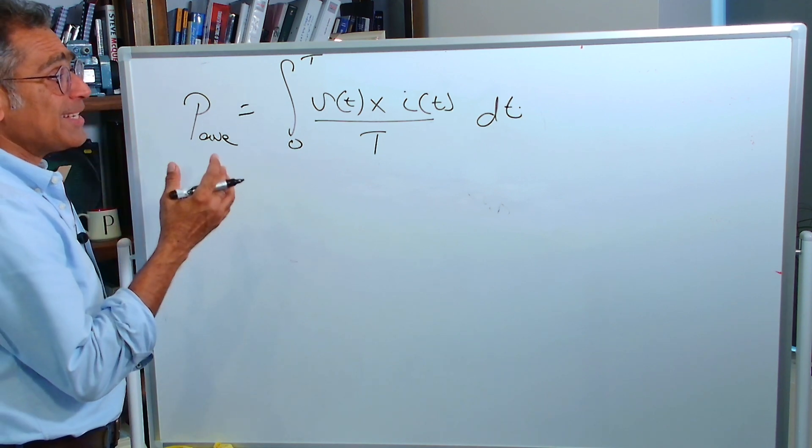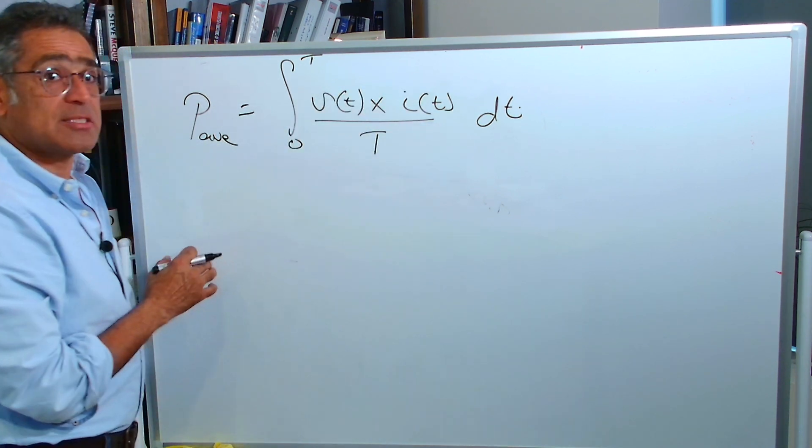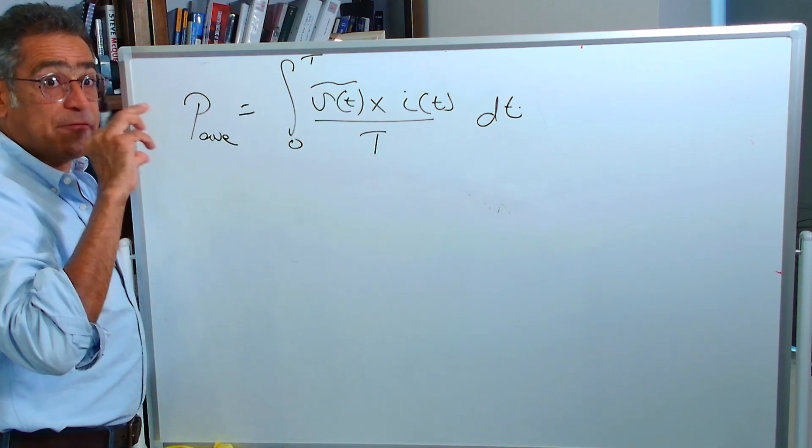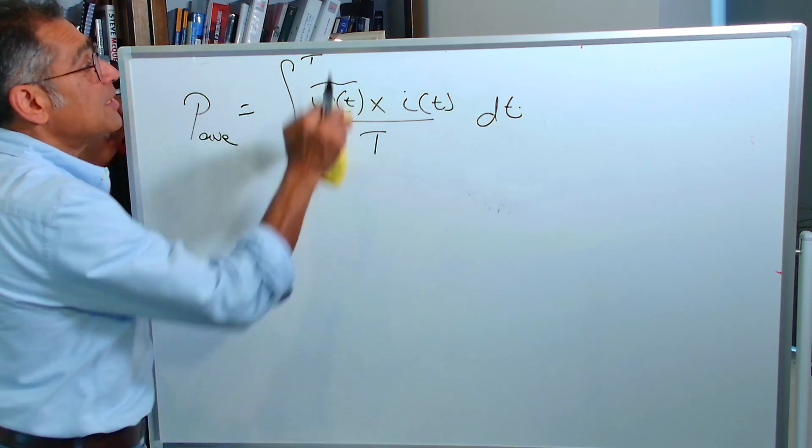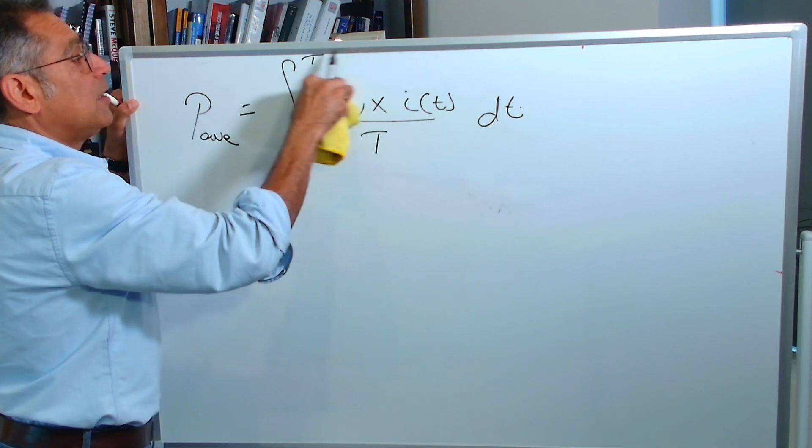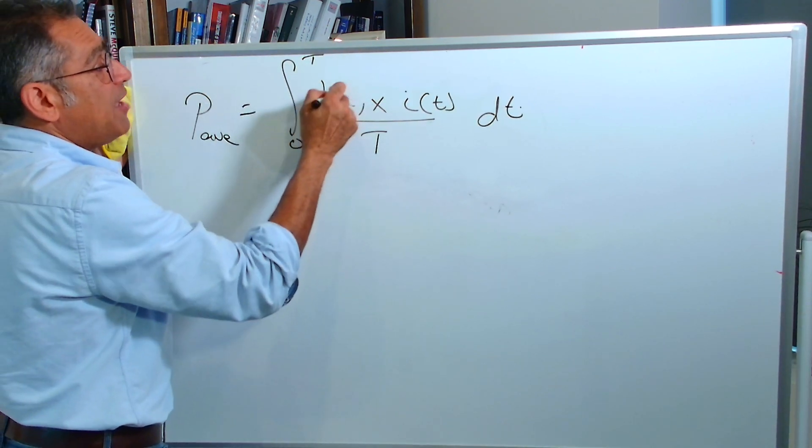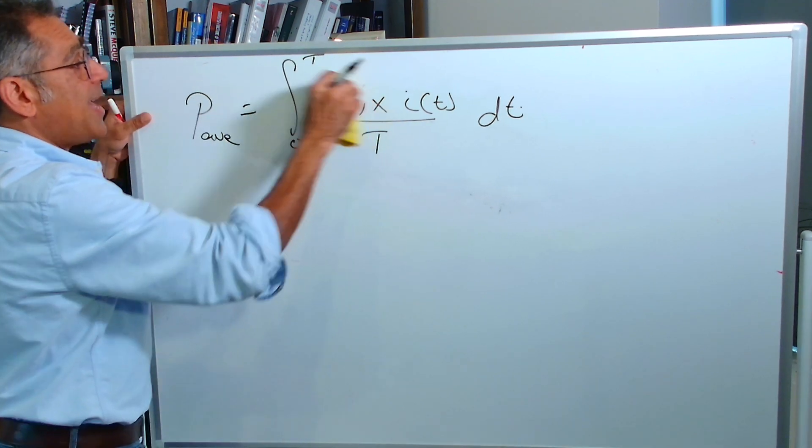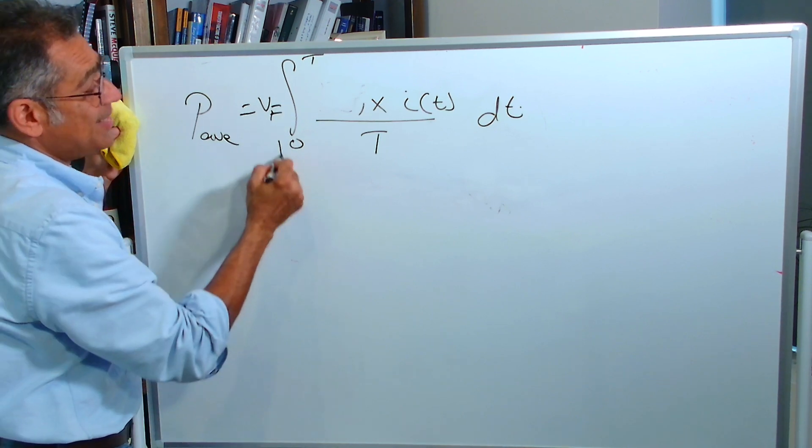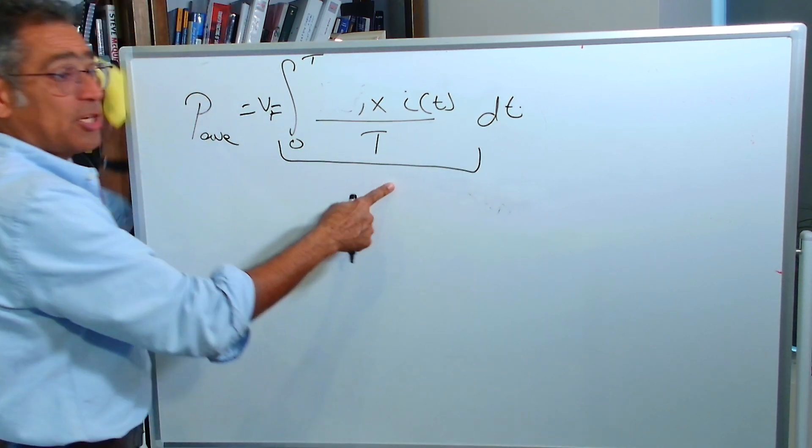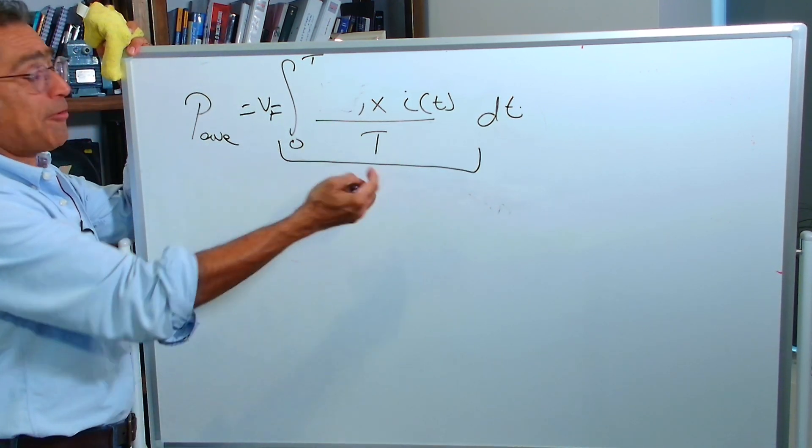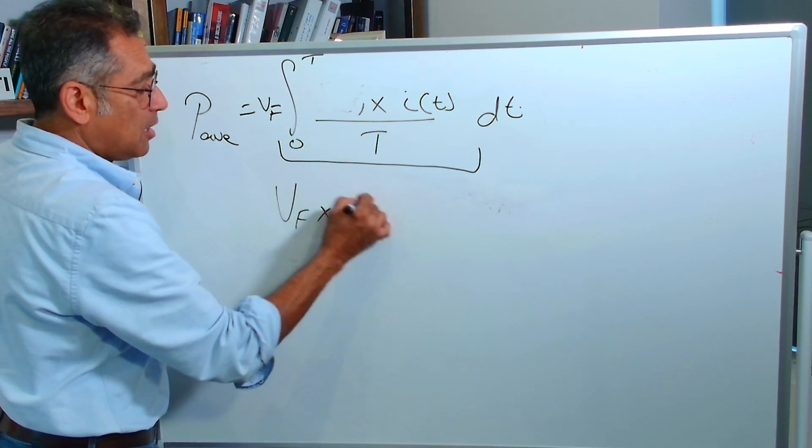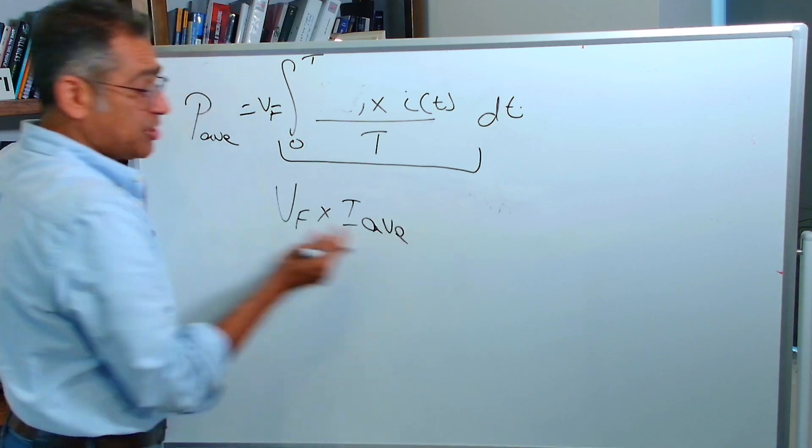Now consider if one of these is constant, with the case of the diode, VT is not dependent on time, because it's forward drop of the diode. So that becomes a constant value, VF. This does not change with respect to time, so it actually comes out of the integral, VF goes here, and this is the definition of the average value of the current. And that's why for a diode, we have VF times I average as the power.